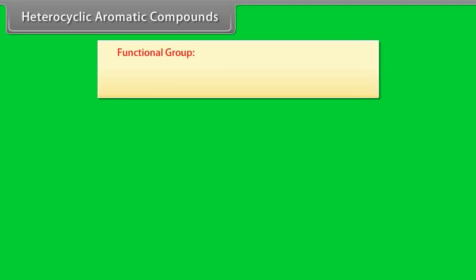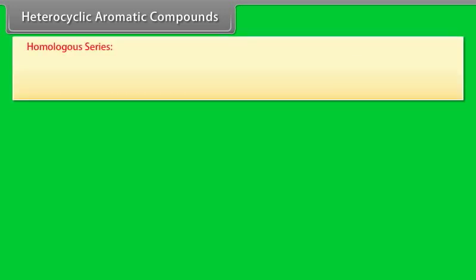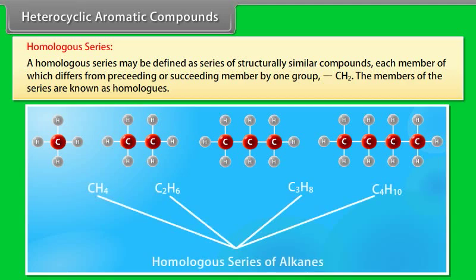A functional group is a specific group of atoms in a molecule responsible for the chemical reactions of that molecule. A homologous series may be defined as a series of structurally similar compounds, each member of which differs from the preceding or succeeding member by one CH2 group. The members of the series are known as homologs.